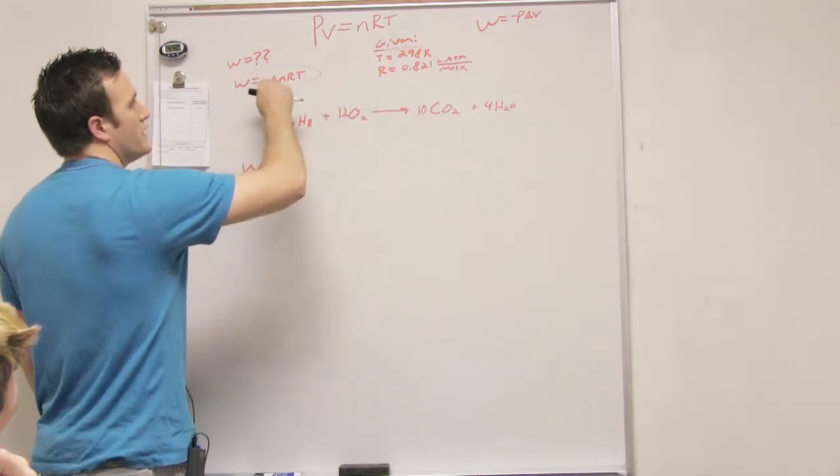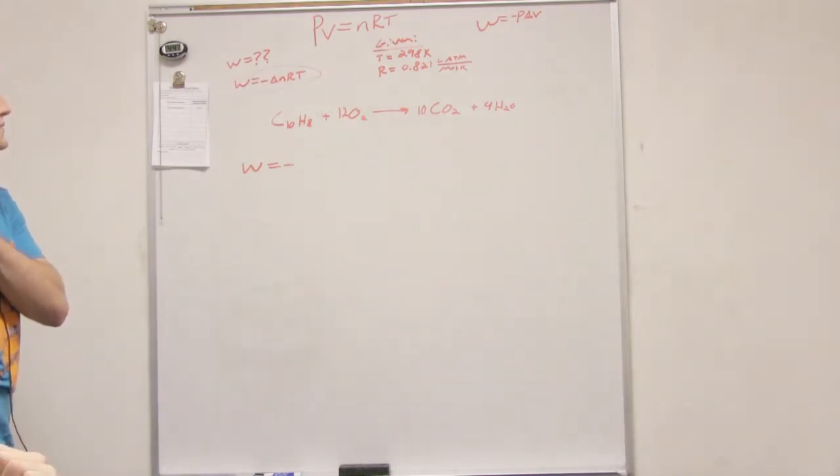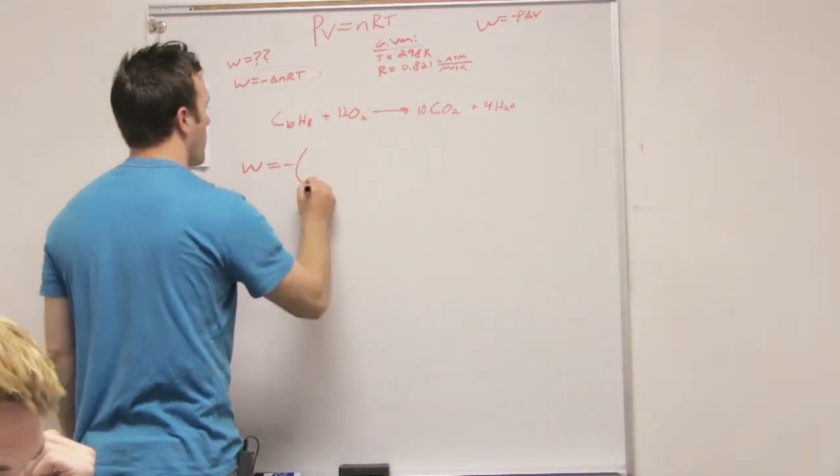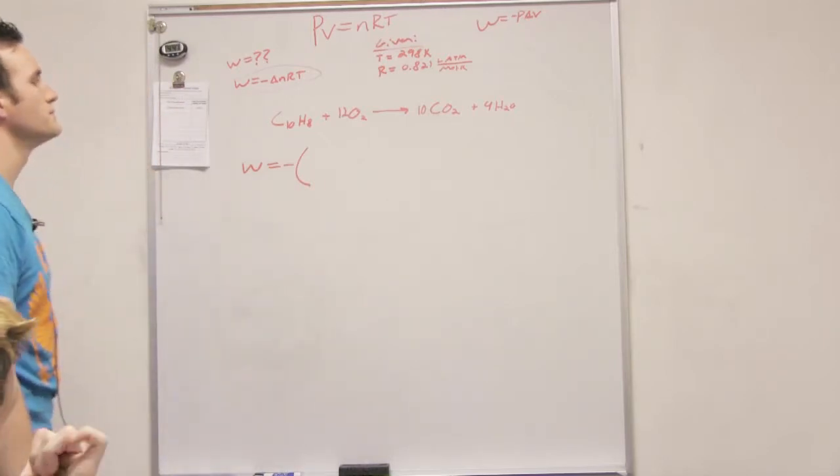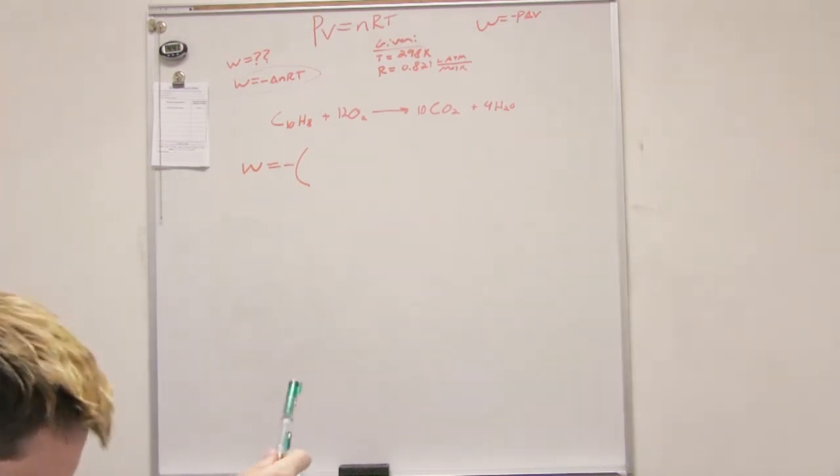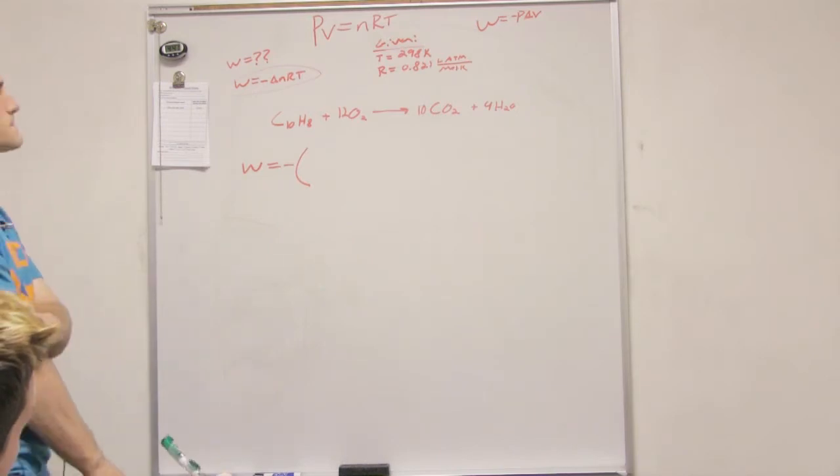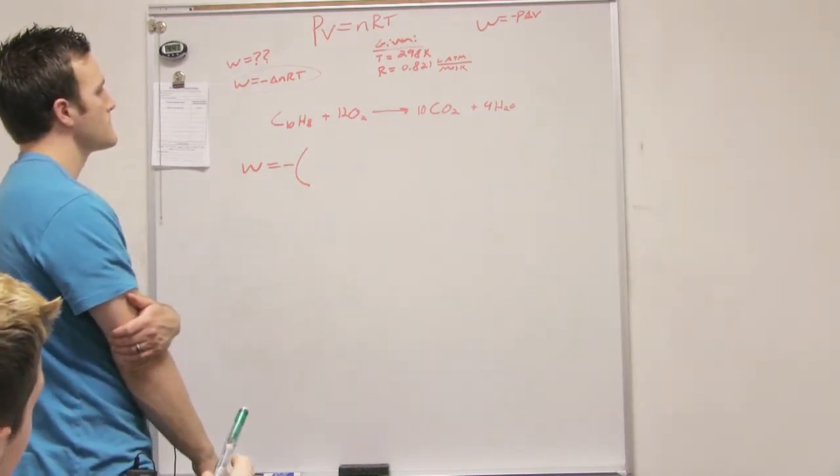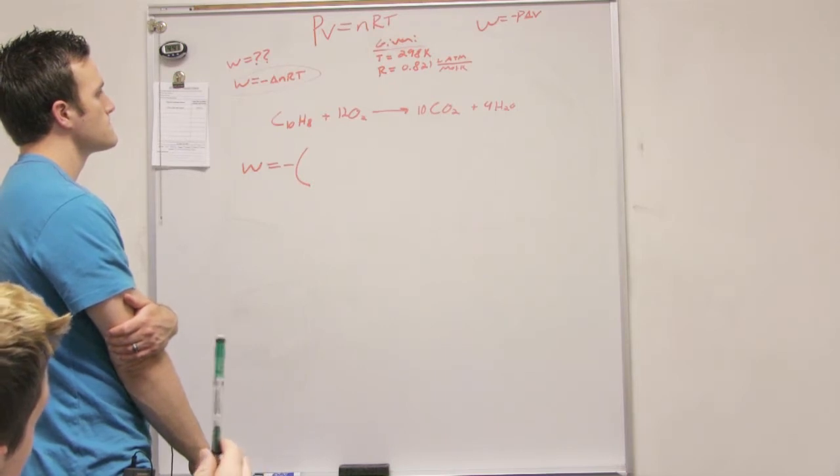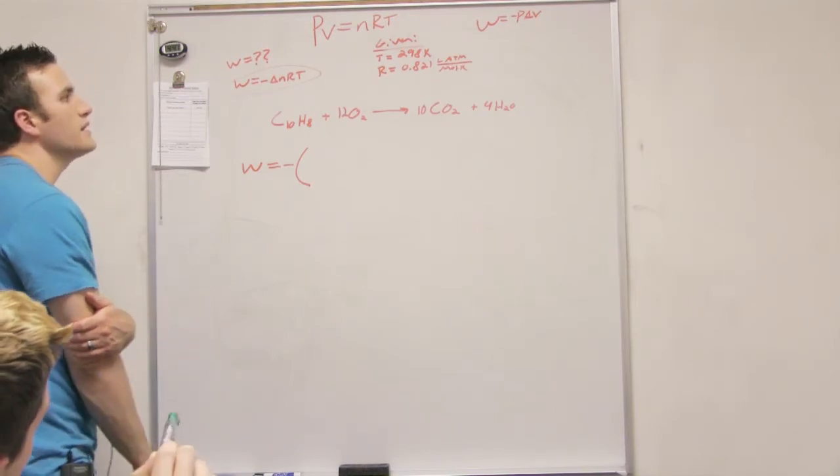So you're right. We know T, we know R. We know n, don't we? Yeah. We can calculate with the gases. Because we know that naphthalene is a solid and H2O is water. And so you can just do 12 minus 10. For what, sorry? To figure out your moles. Or do you go 10, or you'd go 10 minus 12. Because you have 10 CO2 as your final. That's your gas. Minus the 12O2.